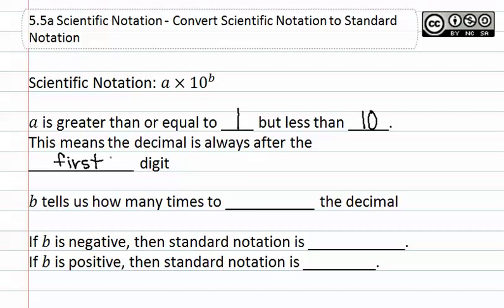b tells us how many times to move the decimal. If b is negative, then standard notation is very small. If b is positive, then the standard notation is big. This means that if we have a negative exponent, we have a very small number. If we have a positive exponent, we have a very large number.